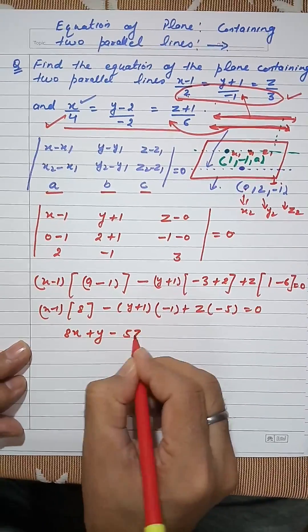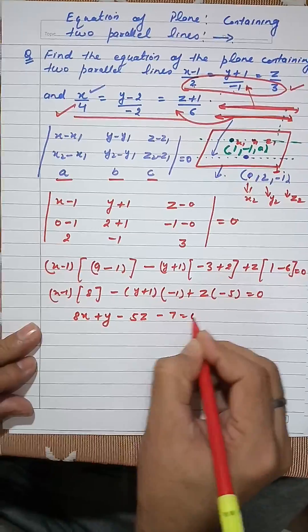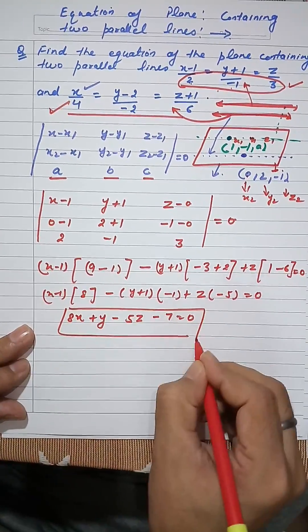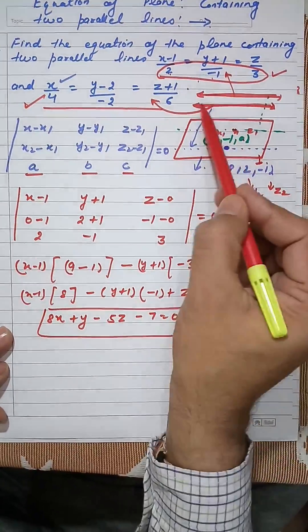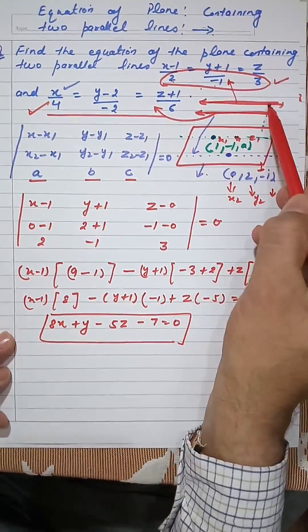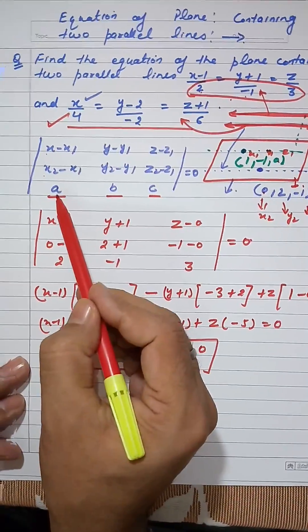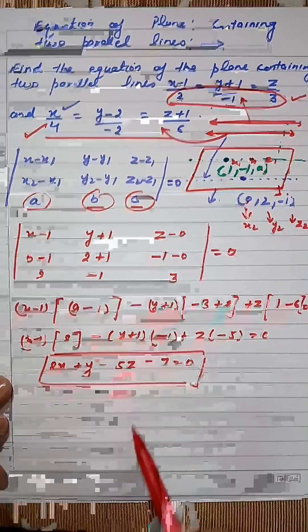Solving this equation, we get 8x plus y minus 5z minus 7 = 0. That is the equation of the required plane. This is the shortcut method when a plane contains two parallel lines, using the determinant formula with x minus x1, x2 minus x1, and the direction ratios. A conceptual problem will be discussed in a later video.